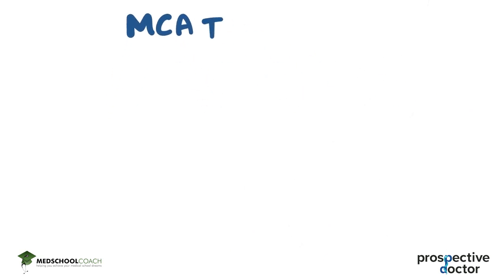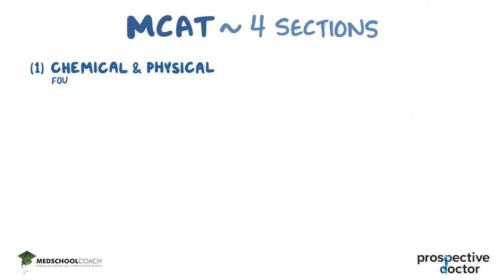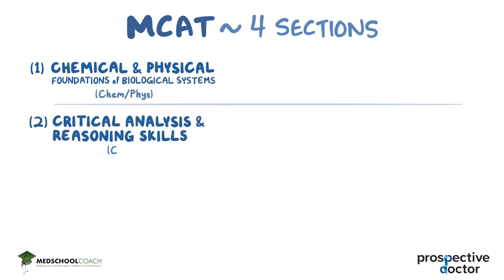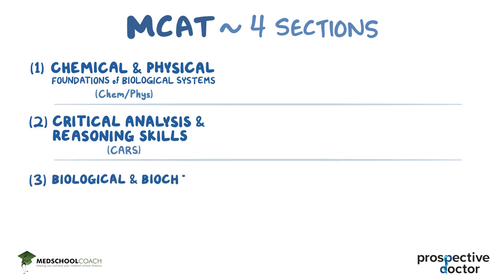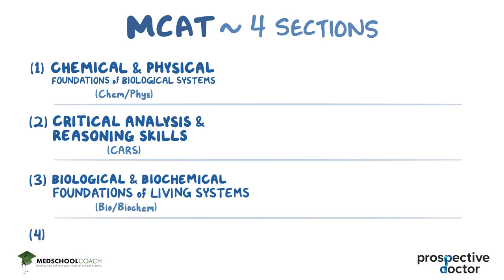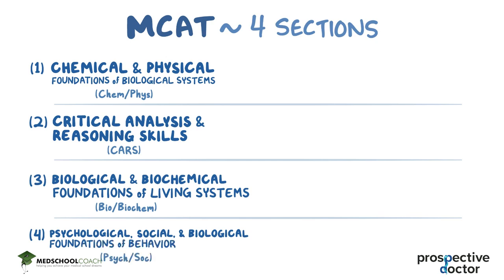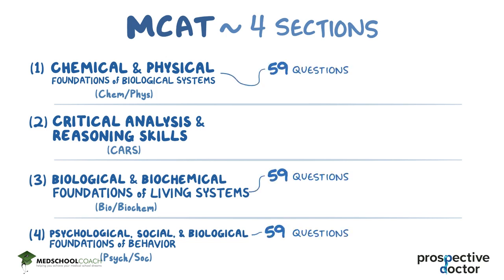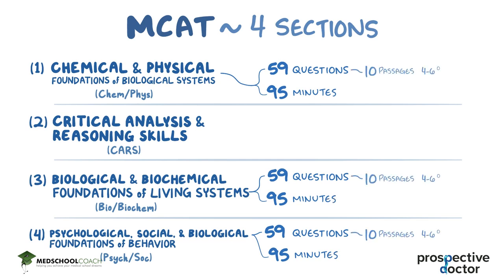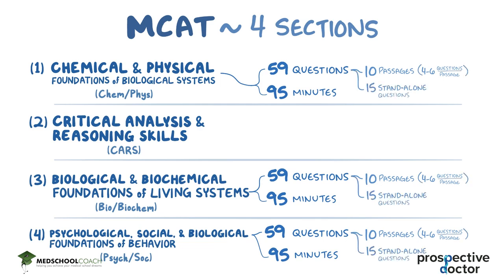The MCAT itself has four sections: Chemical and Physical Foundations of Biological Systems, or Chem-Phys for short; Critical Analysis and Reasoning Skills, or CARS for short; Biological and Biochemical Foundations of Living Systems, or Bio-Biochem for short; and lastly, Psychological, Social, and Biological Foundations of Behavior, or Psych-Soci for short. The first, third, and fourth sections have 59 questions each, with a time limit of 95 minutes per section. Each section has 10 passages with 4-6 questions per passage, and there are also 15 independent questions not associated with a passage.